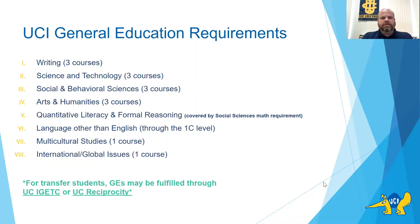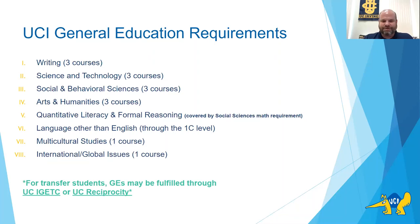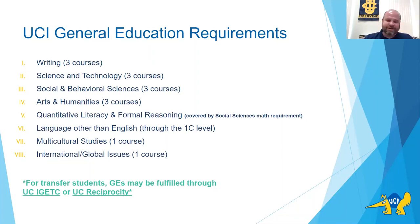At UCI, there are eight general education categories students must meet. The first is writing — three courses total. Second is science and technology — three courses in areas like chemistry, physics, bio-sci, or system science. Category three is social and behavioral sciences — three courses — however, as School of Social Sciences majors, you'll have this category automatically satisfied just by being a sociology major. Category four is arts and humanities — three courses in areas like African-American studies, philosophy, history, art history, or film and media studies.